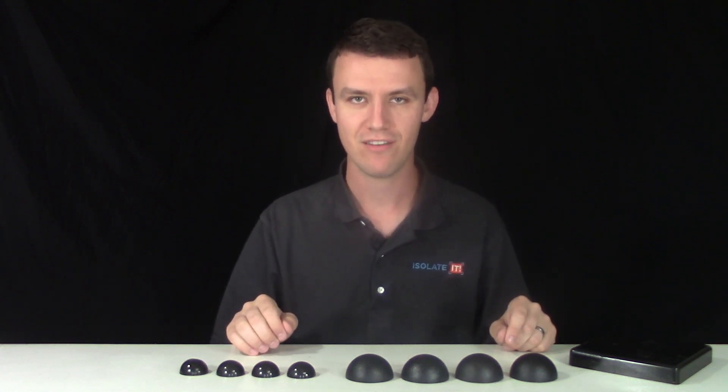In general, fewer isolators provides less contact points for vibration to transfer between the surface and the object. Four is normally an ideal number of isolators.